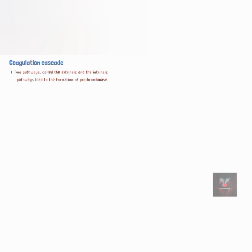The coagulation cascade can be summarized into three steps: two pathways — the extrinsic pathway and the intrinsic pathway — lead to the formation of prothrombinase. Prothrombinase then converts prothrombin into the enzyme thrombin. Thrombin then converts soluble fibrinogen into fibrin, which forms the threads of the clot.